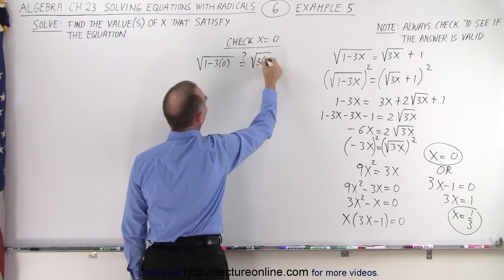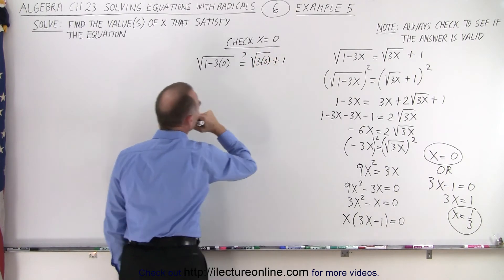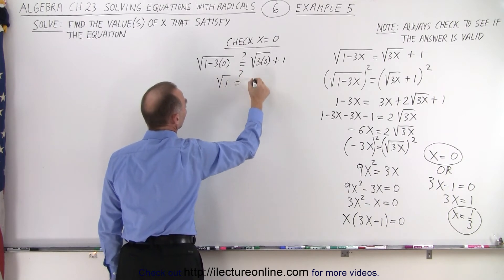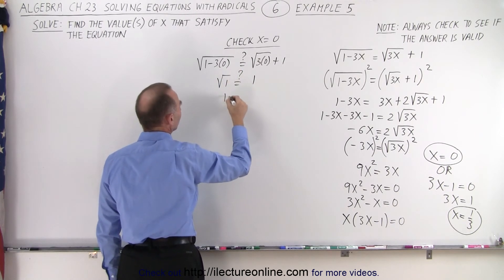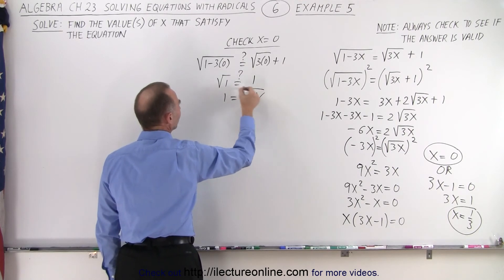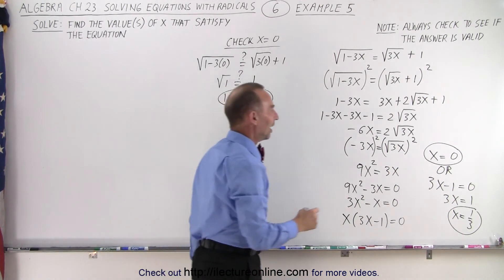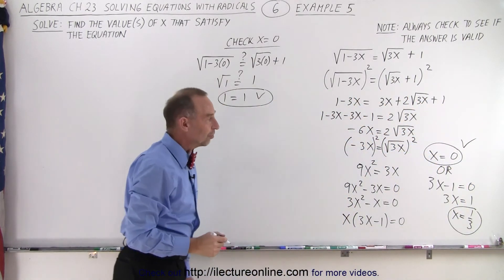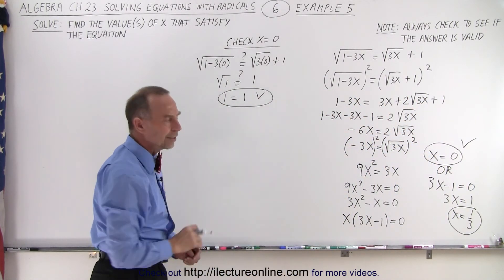So 1 minus 3 times 0, is that equal to question mark, the square root of 3 times 0 plus 1. So that's 0. We get the square root of 1 equals question mark 1. And notice the square root of 1, that's equal to 1. So 1 equals 1. And since that is true, that means x equals 0 is indeed a good solution to this original equation.